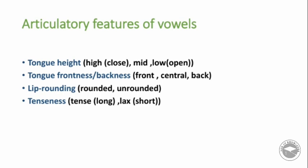There are some features that allow us to distinguish one monophthong from another. For each vowel we describe: first, tongue height — whether it is high, mid, or low (close is another word for high and open for low); second, tongue frontness or backness — whether the sound is front, central, or back; third, lip rounding — whether the sound is rounded or unrounded; and fourth, tenseness — whether the sound is tense or lax.